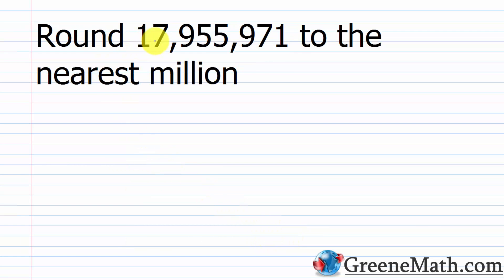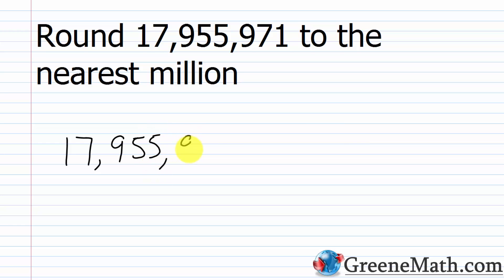For the next problem, we want to round 17,955,971 to the nearest million. So let's rewrite that: 17,955,971. Again, we're rounding to the nearest million, so we're looking for the digit in the millions place, and that's going to be this 7 here. If we look at the digit immediately to the right of that, we have a 9.